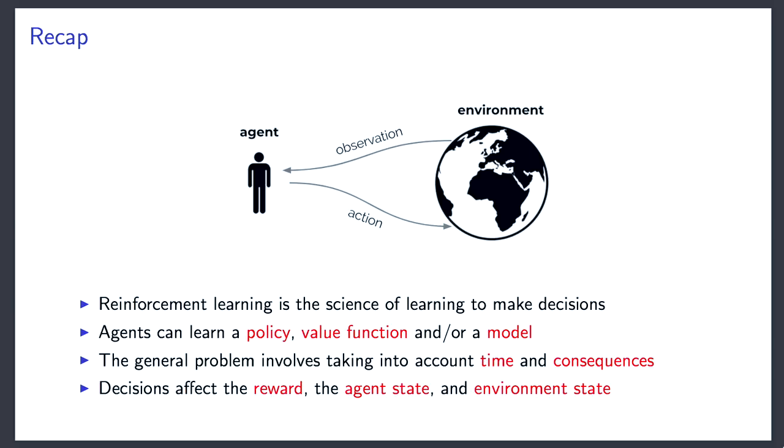The idea is to optimize this interaction loop. In addition, there will be a reward signal, and reinforcement learning is the science of how to learn to make decisions when you want to optimize this reward signal, or more generally, when you want to learn about the world. An agent could learn a policy, a value function, and/or a model — we'll bump into each of these again in this lecture.